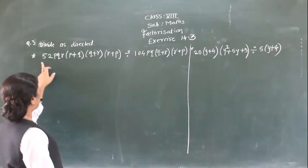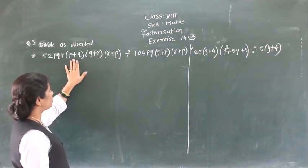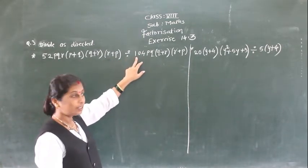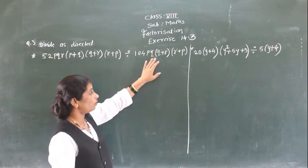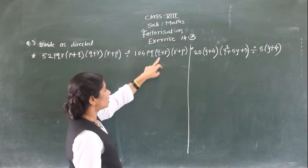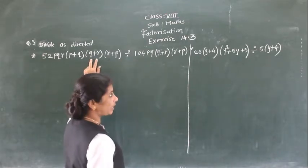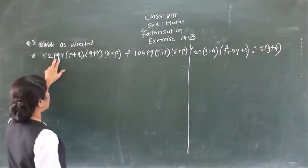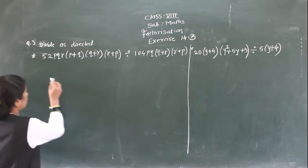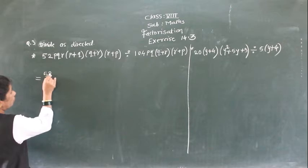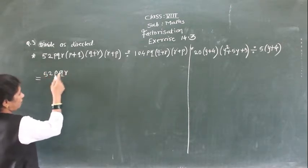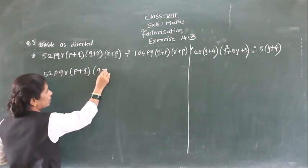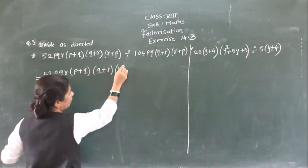Now next example: 52pqr(p+2)(q+r)(r+p) divided by 100p × 104p × q(q+r)(r+p). Simply see: (q+r) gets cancelled, (r+p) gets cancelled. Then p² gets cancelled. Here 52 = p × 2 × r multiplied by (p+2)(q+r)(r+p).